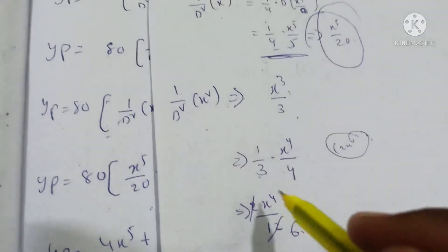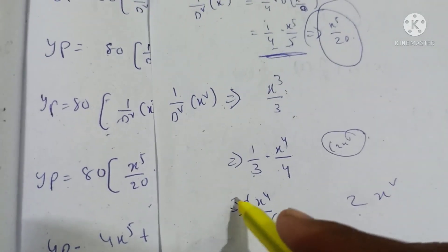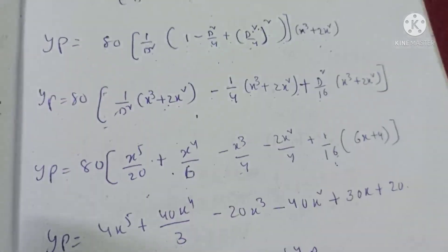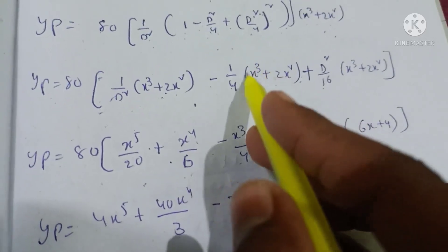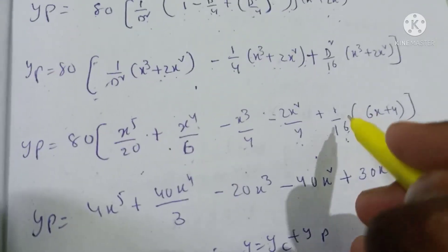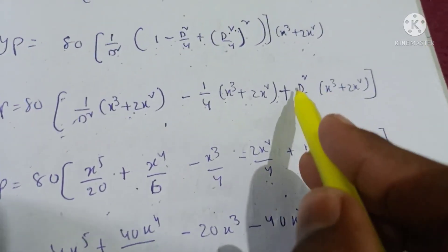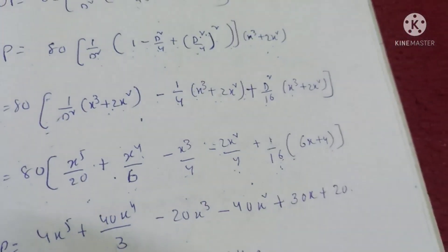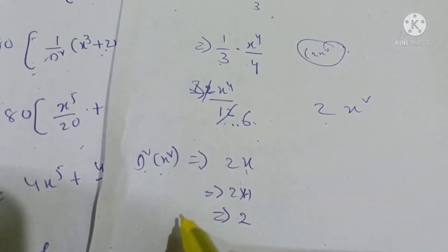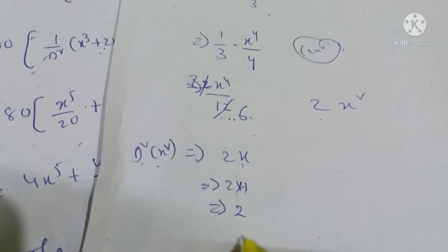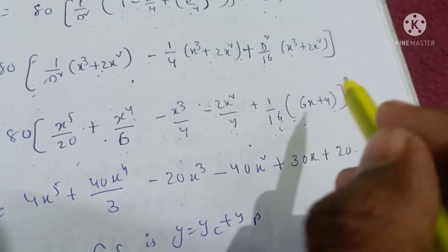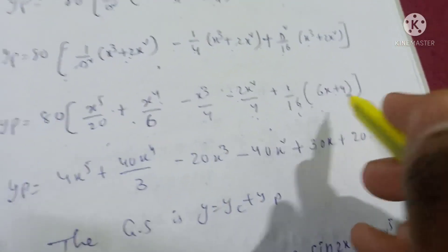Computing derivatives: D squared of x cubed gives 6x. D squared of 2x squared gives 4. So the expression becomes x cubed minus x divided by 4 by 12, with 2x squared terms. The double derivative of x cubed is 6x, and double derivative of 2x squared is 4. Thus 1 by 16 into 6x plus 4, applying D squared operator.